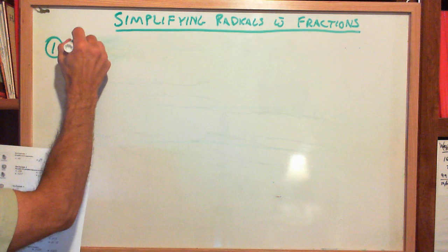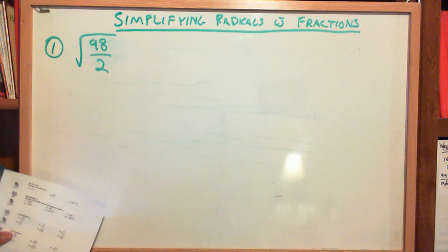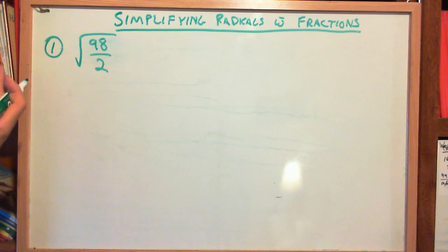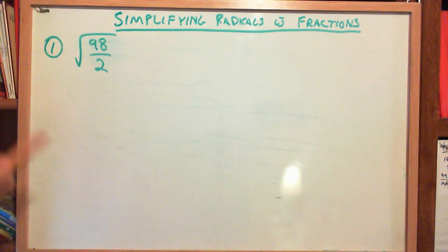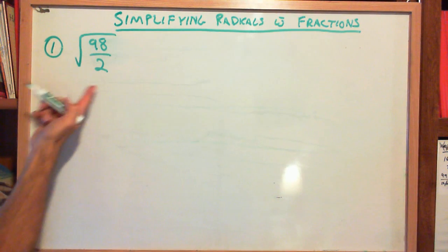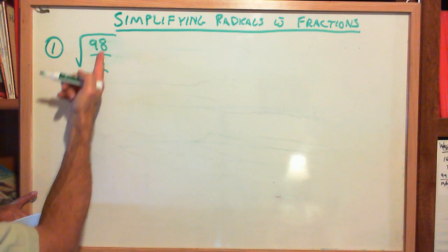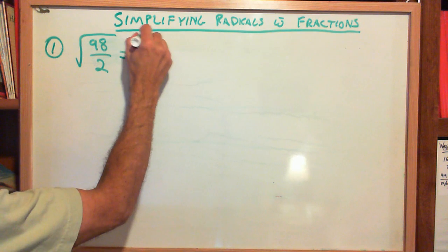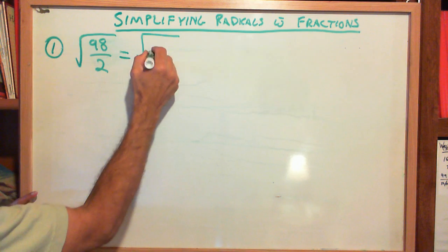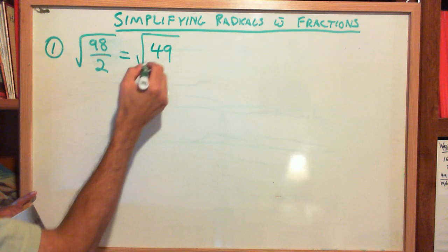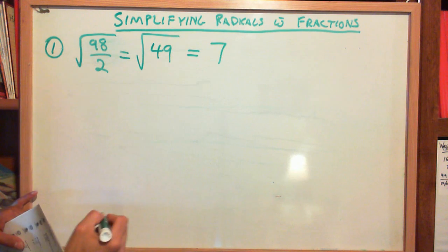Example 1: the square root of 98 over 2. I ask myself, is 98 a perfect square? No. Is 2 a perfect square? No. Since 2 goes into both — they're both even numbers — I'm going to simplify inside the radical. 2 into 98 goes 49 times. So this becomes the square root of 49, which is 7. Done.